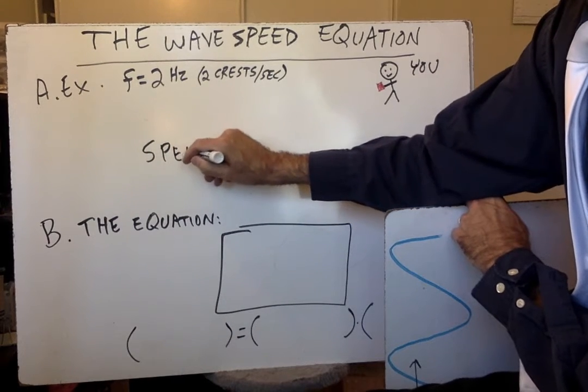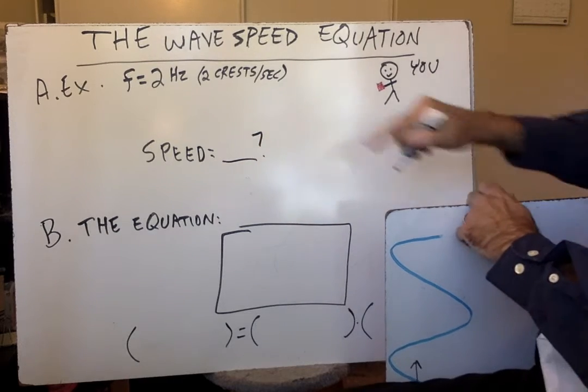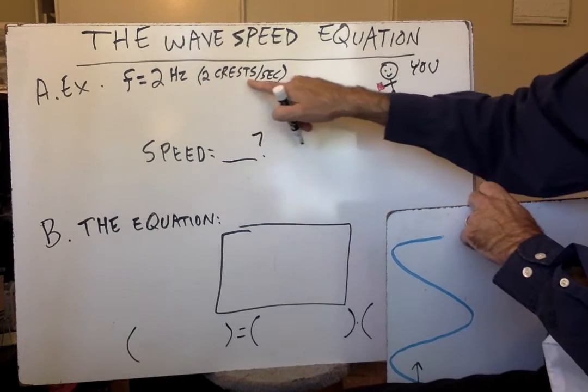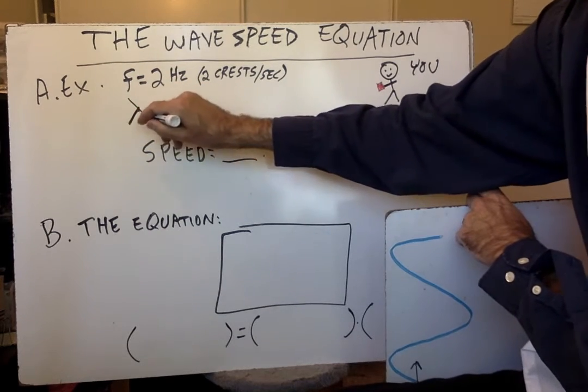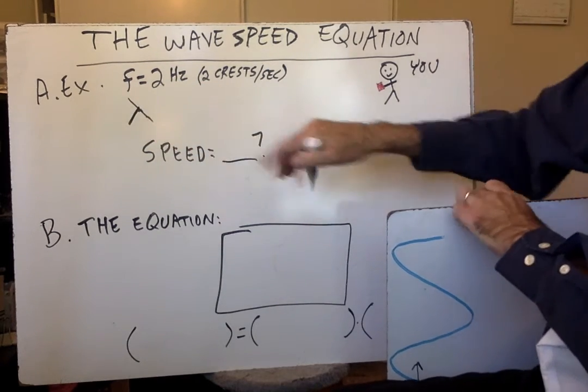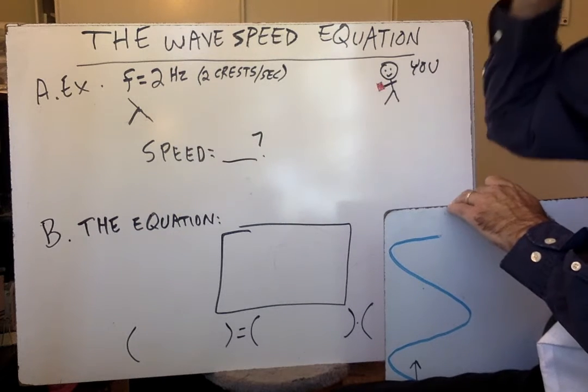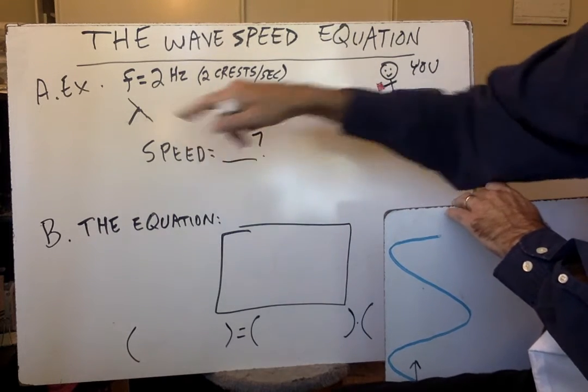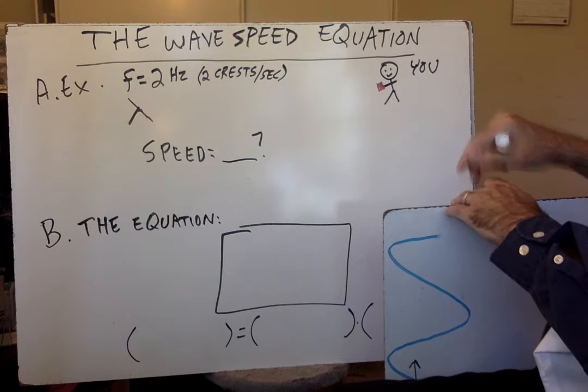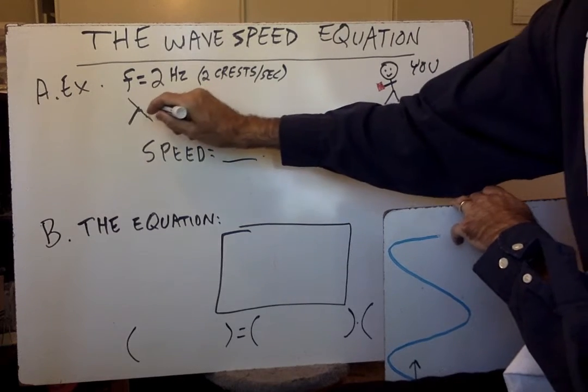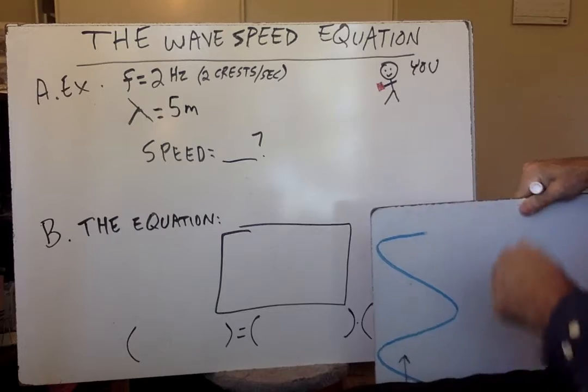Calculate the speed if you only have those two numbers. So you're given that the frequency is 2 hertz or 2 crests per second, and the wavelength, and that's the symbol for wavelength. For the final, you should be able to draw that symbol correctly and know the name of it. I could ask you that on the final. The name is lambda, it's a Greek letter, that's how they made their L. It's a lowercase L in Greek, and L for length, wavelength. And you're given that the wavelength is 5 meters, and you're asked to calculate the speed.